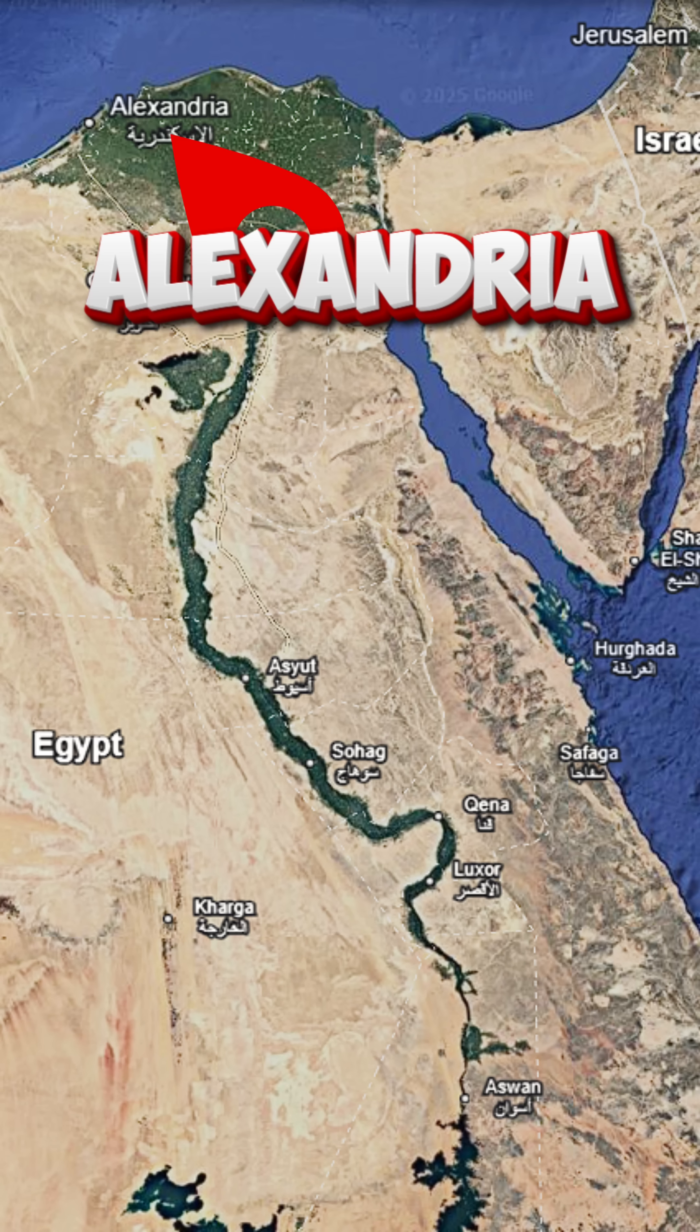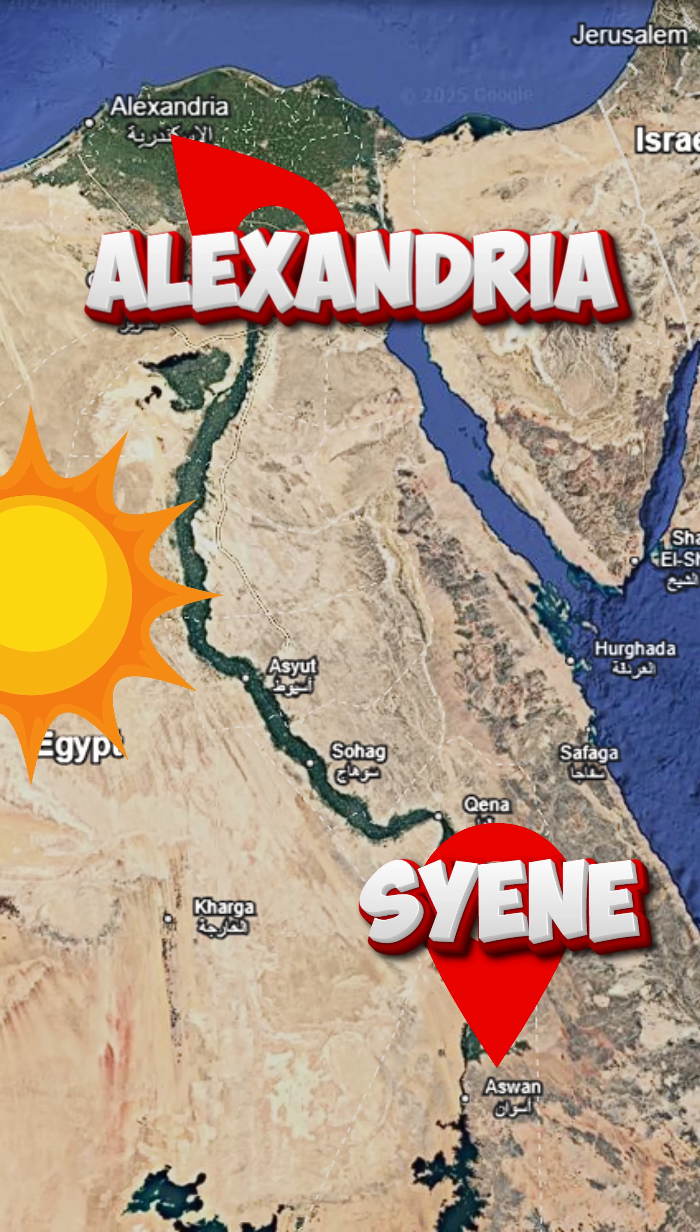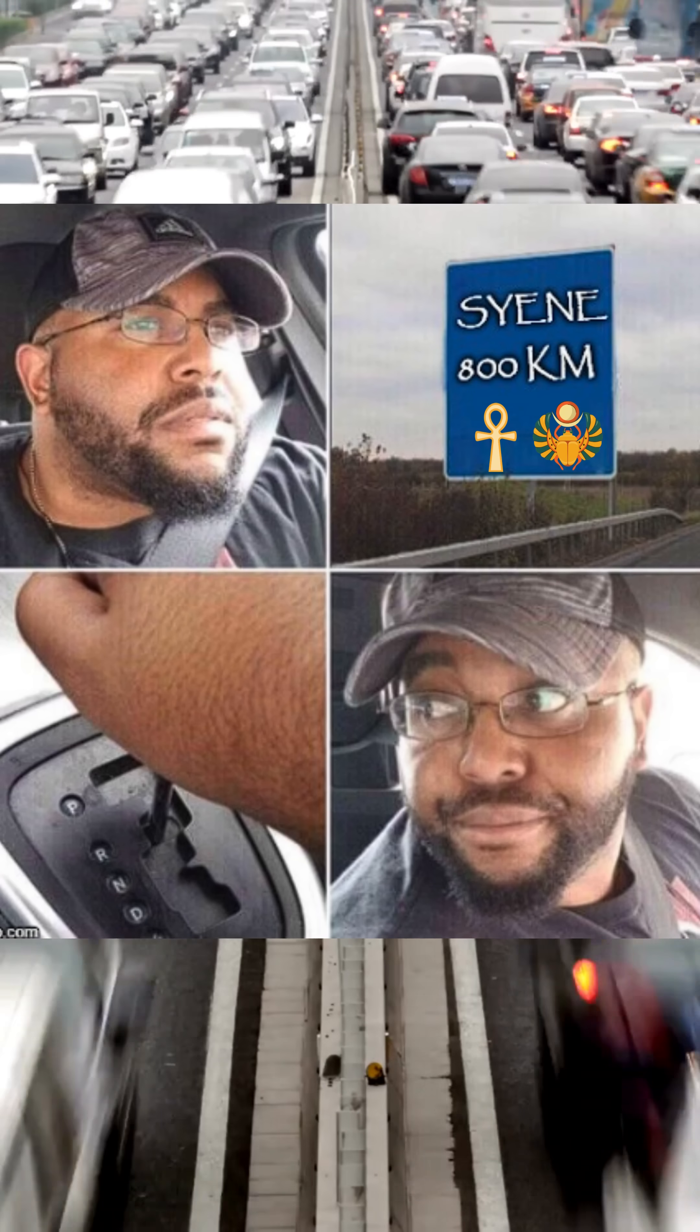Working from Alexandria, he knew that in the distant city of Cyanese, the sun casts a zero shadow at noon on the summer solstice. And you complain about your commute.